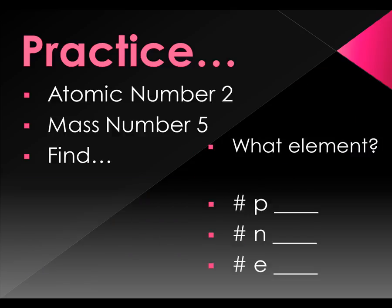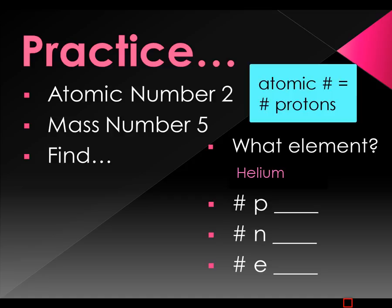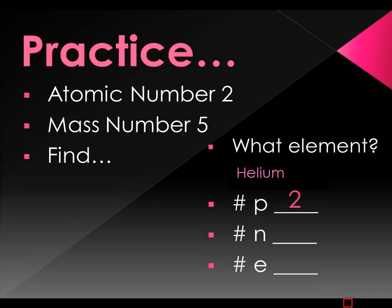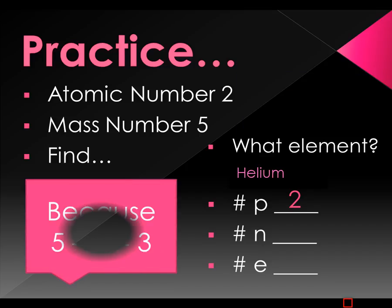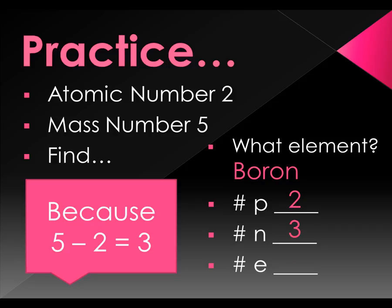Next one. Atomic number is 2, mass number is 5. If I have the atomic number, I can get the element. Atomic number 2 is helium. The number of protons is the same as the atomic number, that is 2. For the number of neutrons, if I have the mass and the atomic number, I just subtract. 5 minus 2 is 3. Electrons is always equal to protons.